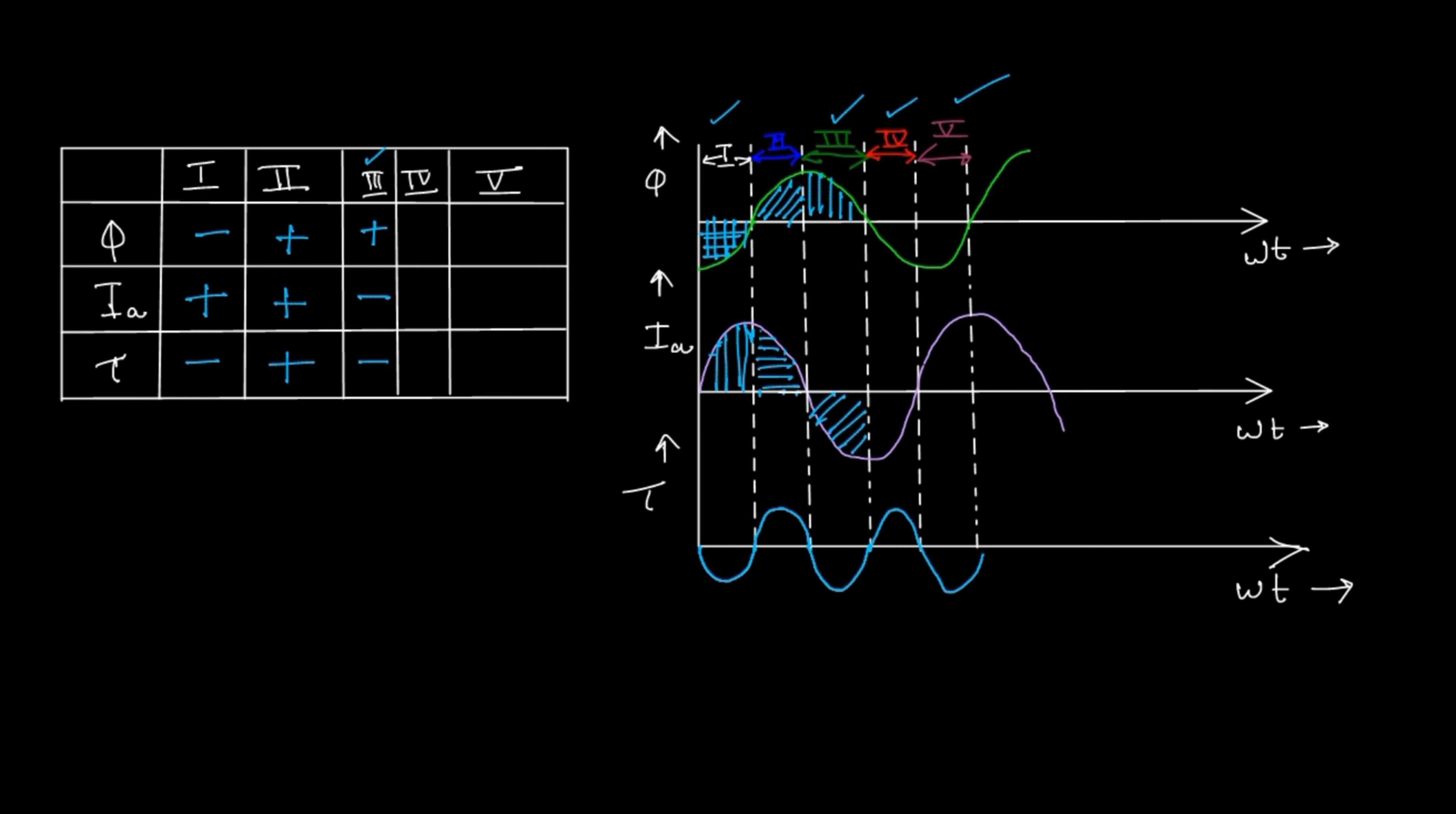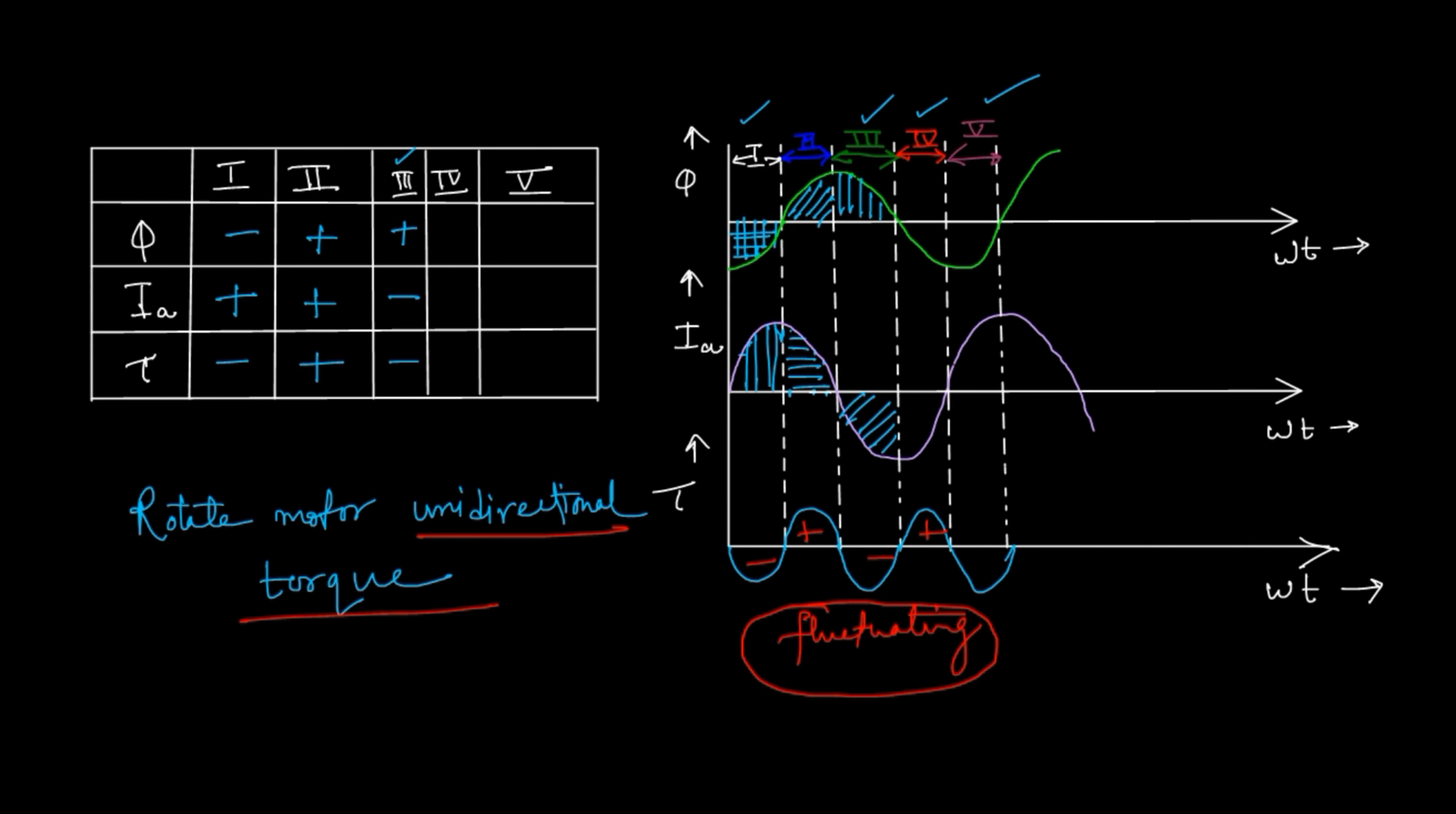To rotate something, specifically a motor, you need to have a unidirectional torque. But what we are getting from this waveform is negative, positive, negative, again positive. That means the torque is fluctuating. This fluctuating torque will not be able to rotate the motor. So AC supply to a DC shunt motor can never rotate the motor.